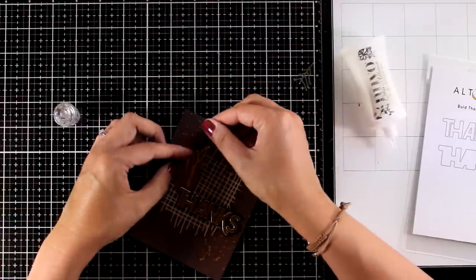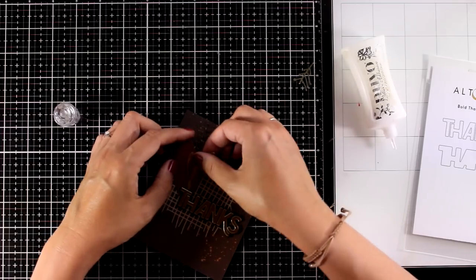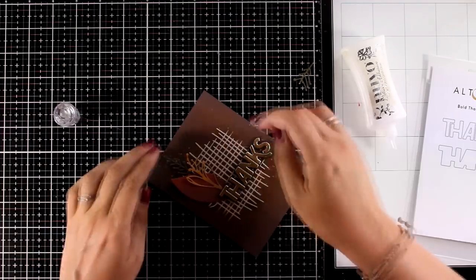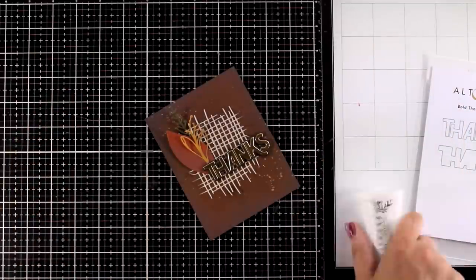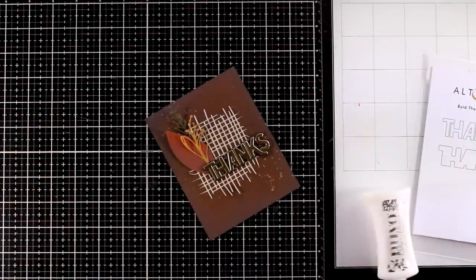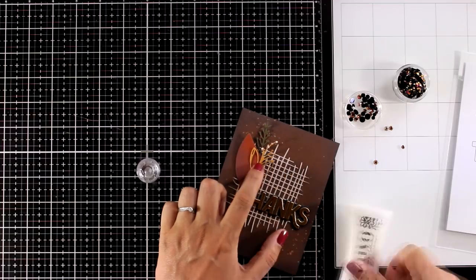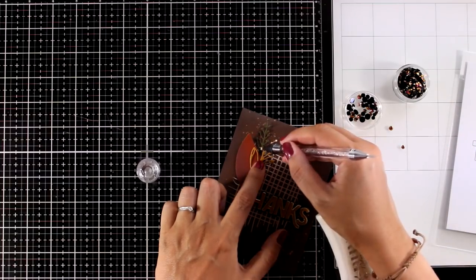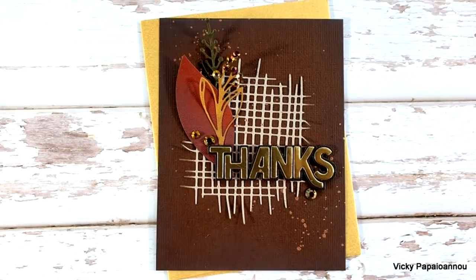And then on top I'm going to stick the rest of the die cuts. Again by using my glue. So I created a lovely cluster of those leaves in lovely fall colors. This is a great card for fall as well as for Thanksgiving. To finish it off I did add some copper gems here and there and you can see some close-up photos here.